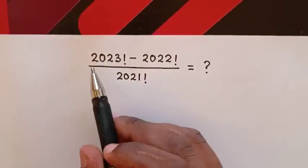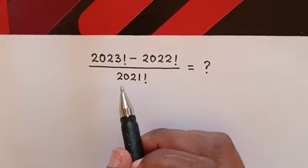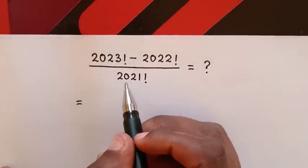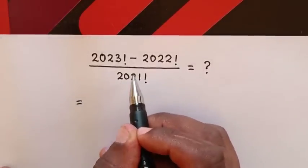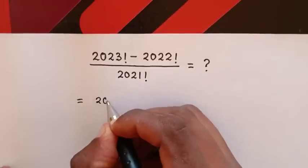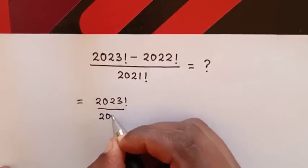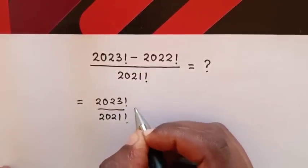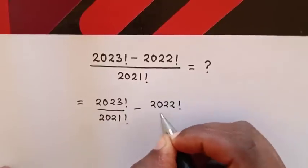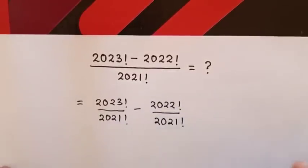Hello, how to solve 2023 factorial minus 2022 factorial over 2021 factorial? This is equal to — this 2021 factorial will divide both terms. So it will be 2023 factorial over 2021 factorial minus 2022 factorial over 2021 factorial.